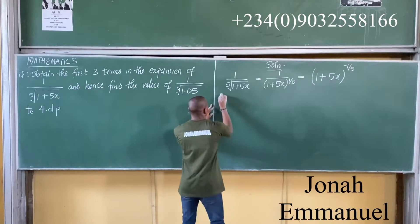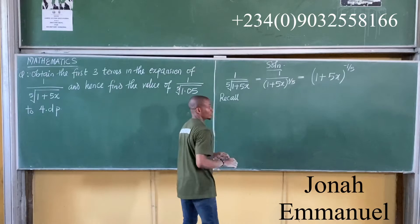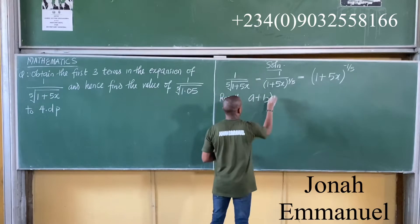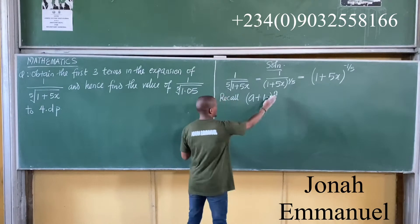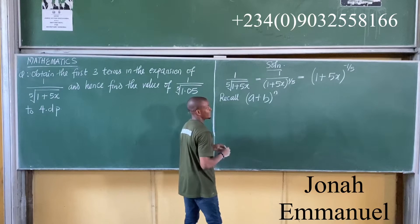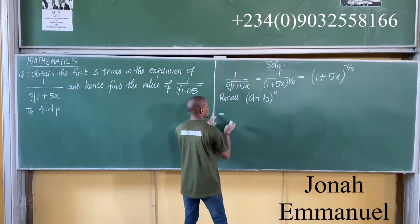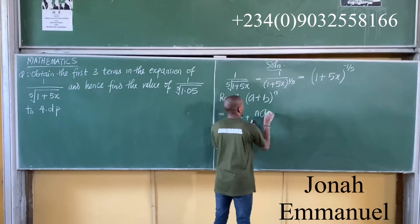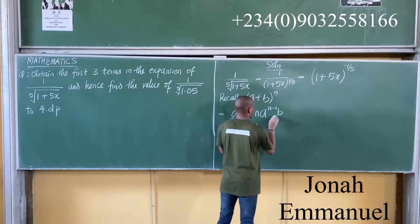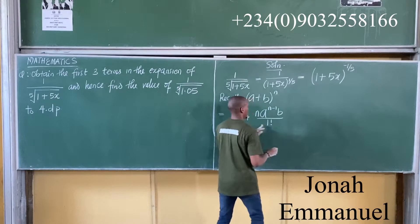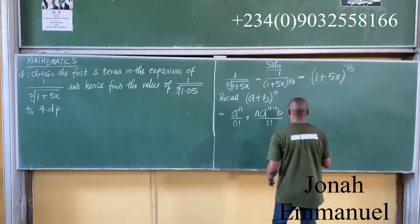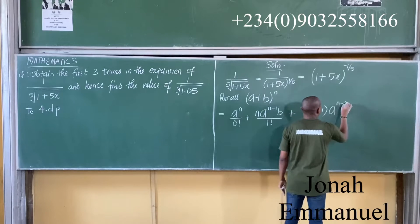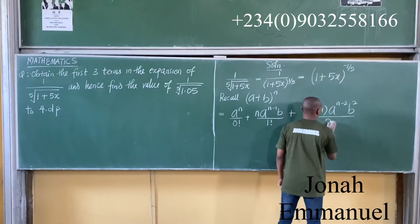Next step, I will recall the formula for the expansion of a rational or negative index. We said, for (a+b) to the power n, where n is a rational or negative index, that is equal to a to the power n over 0 factorial, plus n times a to the power (n-1) times b over 1 factorial, plus n(n-1) times a to the power (n-2) times b squared over 2 factorial.